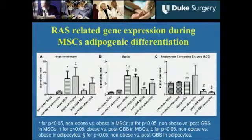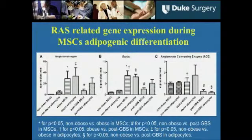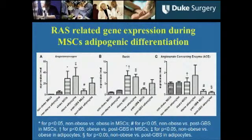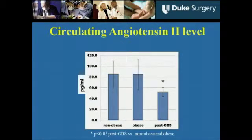RAS-related gene and angiotensin gene expression increased in obese mesenchymal stem cells and obese differentiated adipocytes. Interestingly, angiotensin converting enzyme gene expression was significantly decreased after gastric bypass surgery. Strikingly, circulating angiotensin II level was also significantly decreased after gastric bypass surgery compared to the non-obese and obese groups.